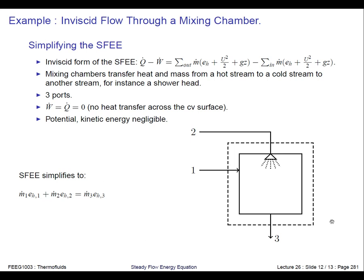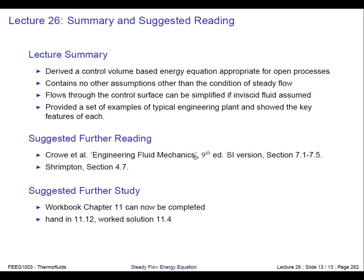For a mixing chamber, you have a hot stream and a cold stream coming in, and the mixture flow coming out is the sum of the energies. Three ports, no work or thermal transfers, potential and kinetic energy changes negligible. To summarize: we've covered the steady flow energy equation, understood it derives from the first law, went from a system to a control volume, added all the various forms of energy, assumed inviscid flow to simplify the convective terms, assumed steady state, and derived a simple energy balance equation with examples of how to simplify it for different engineering problems.